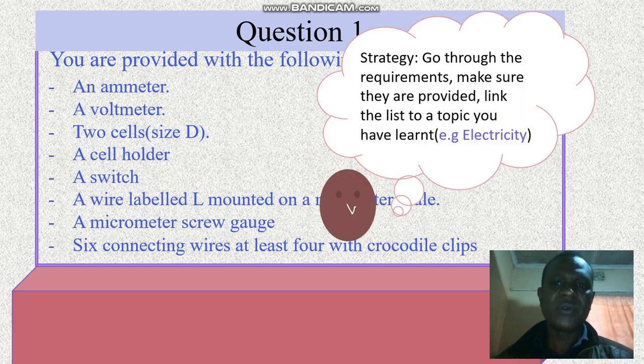Now go through the questions and the requirements. Make sure they are provided. Link the list to the topic you have learned before, e.g. electricity.